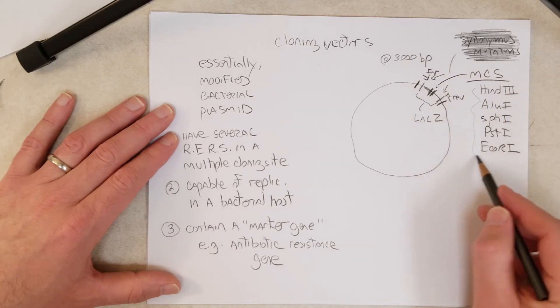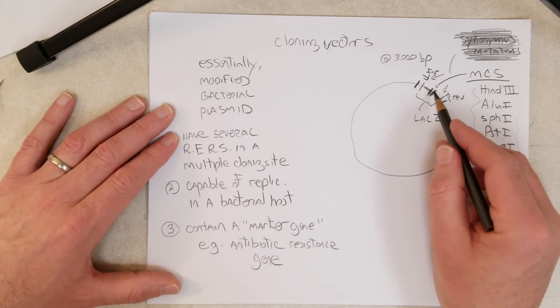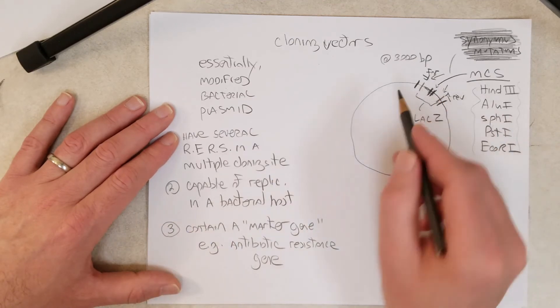And again, these restriction endonucleases are going to be useful for opening up the plasmid and then putting in a molecule into that multiple cloning site.